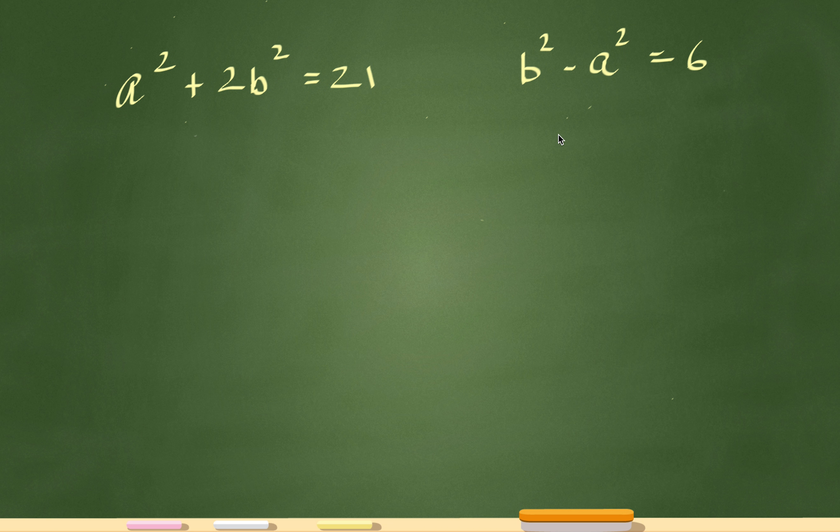So the first thing, I'm just going to talk about what I did. I saw b squared minus a squared equals 6, right? And I tried factoring this out. I know that b plus a times b minus a is the same thing as b squared minus a squared.